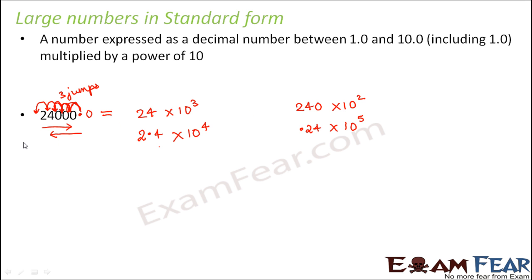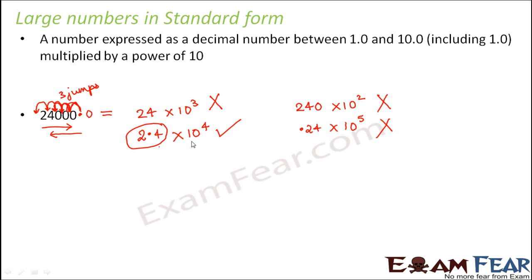But which one is the standard form? Standard form requires the number to be expressed as a value between 1 and 10. Is 24 between 1 and 10? No — so that is not standard form. Is 240 between 1 and 10? No. Is 2.4 between 1 and 10? Yes! Is 0.24 between 1 and 10? No, it is less than 1. So the standard form is 2.4 into 10 to the power 4, which expresses 24,000 as a decimal number between 1 and 10 multiplied by a power of 10.